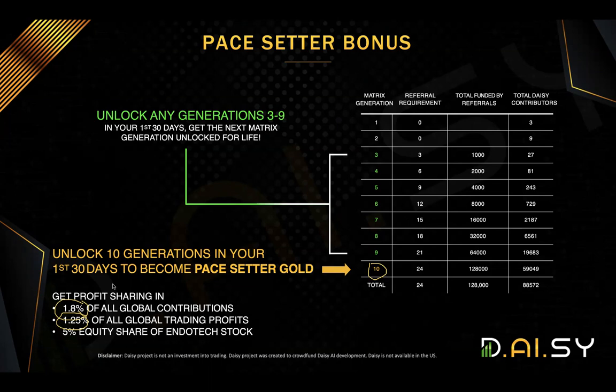The pay setter gold gives you incredible earning potential. If you unlock ten generations within 30 days, you will get access to the pay setter gold pool, which includes 1.8% of all global contributions — 1.8% of all crowdfunding packages contributed globally. You will also get a share from a 1.25% global trading profit pool. Both pools will be distributed across all pay setter gold members. For example, if $10 million was contributed to the crowdfunding, 1.8% — which is $180,000 — will be distributed across all pay setter gold members. There will also be an additional 5% stock equity distributed across all pay setter gold members.